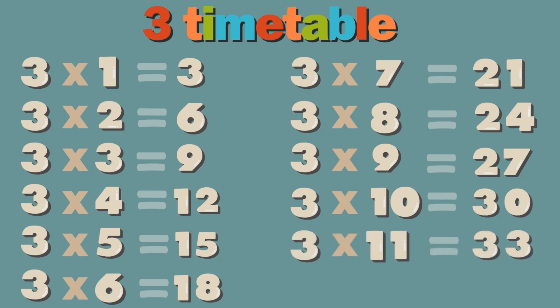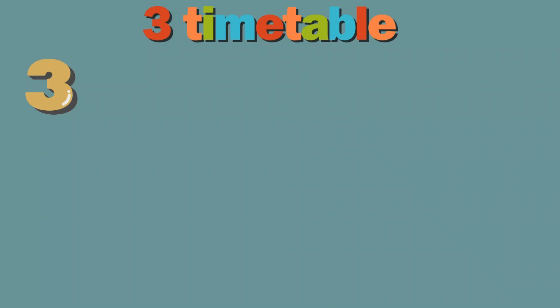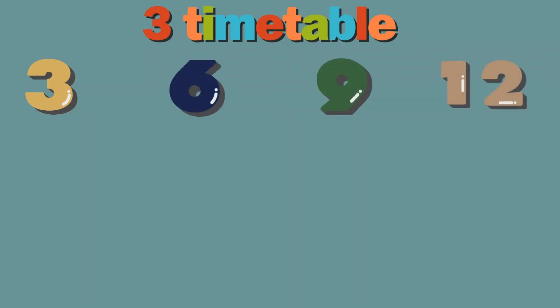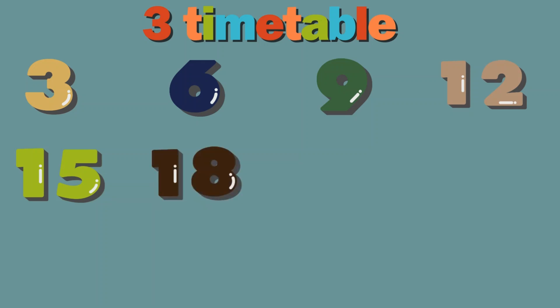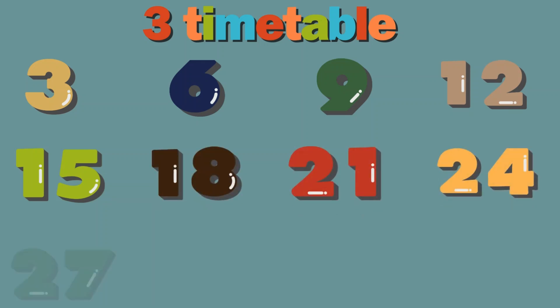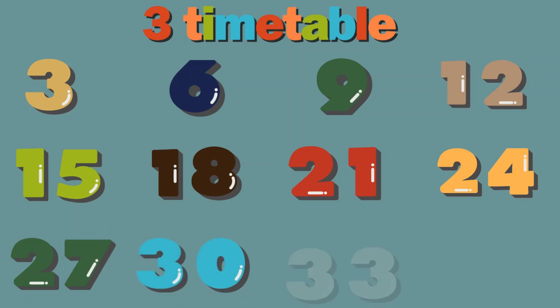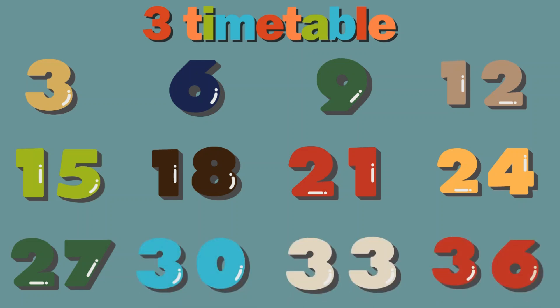3 times 11 equals 33. 3 times 12 equals 36. 3, 6, 9, 12, 15, 18, 21, 24, 27, 30, 33, 36.